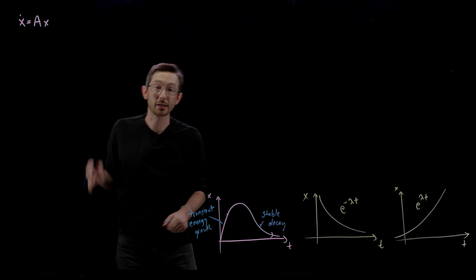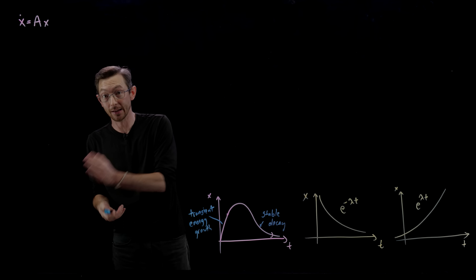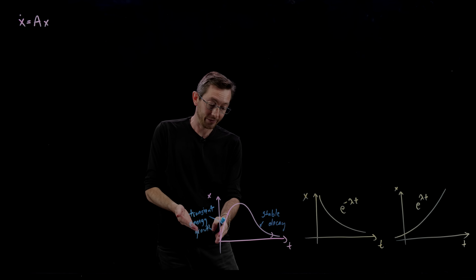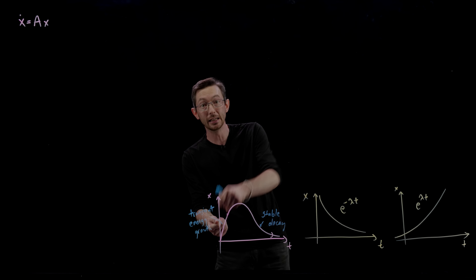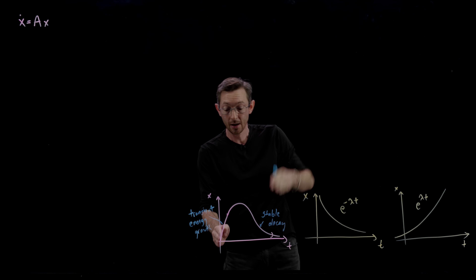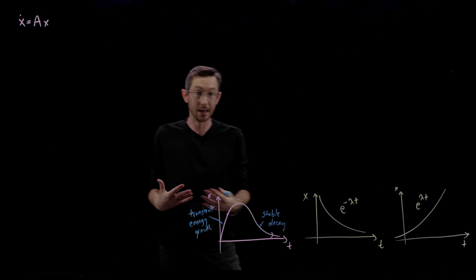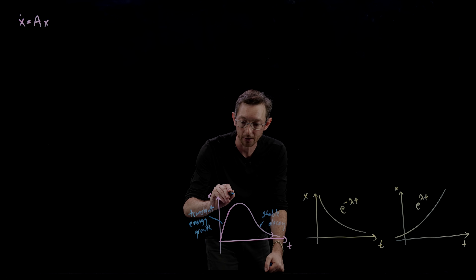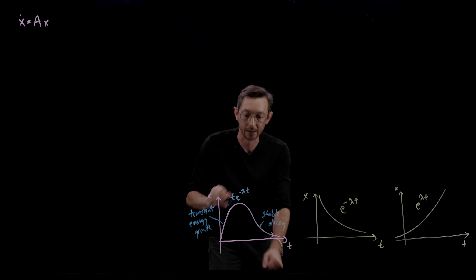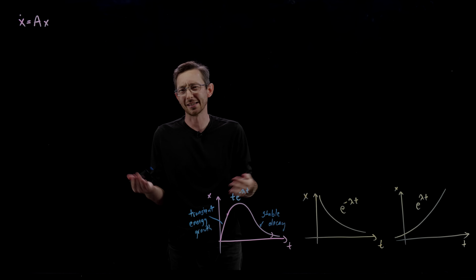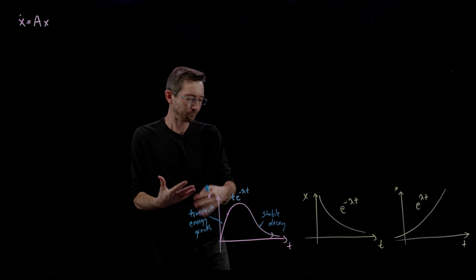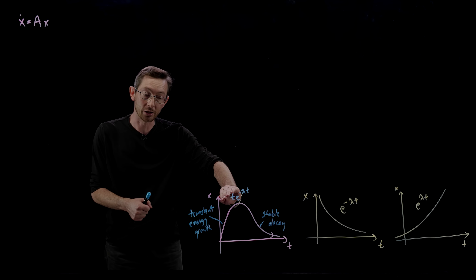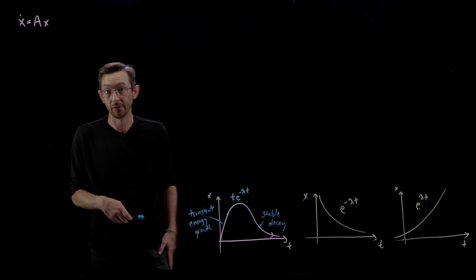These systems — x dot equals Ax — have A matrices with stable eigenvalues with a negative real part. But through some interesting mechanism, they have this initial rise of the state away from x equals zero, and then eventually it slowly decays back. It's often characterized by dynamics that look like t times e to the minus lambda t. These are called secular terms — secular meaning transient or not permanent.